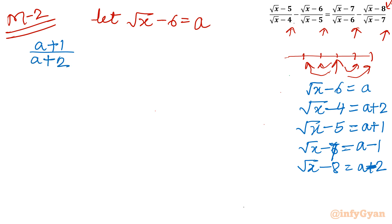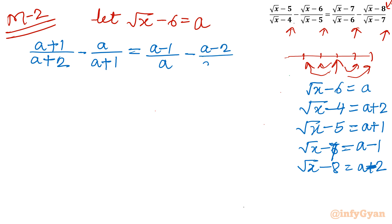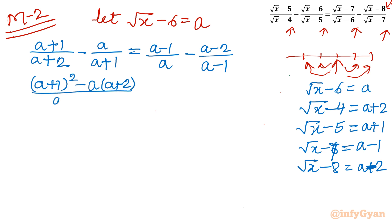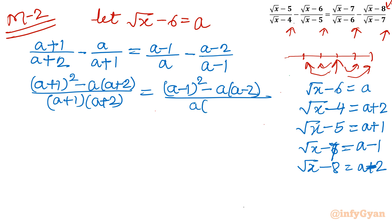On the right hand side: (a − 1) over a, minus (a − 2) over (a − 1). Taking LCM on the left: (a + 1)² − a(a + 2), all divided by (a + 1)(a + 2). On the right: (a − 1)² − a(a − 2), all divided by a(a − 1).